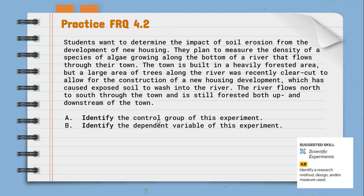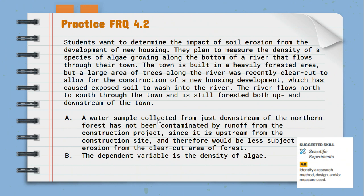The town is built in a heavily forested area, but a large area of trees along the river was recently clear-cut to allow for construction of a new housing development, causing exposed soil to wash into the river. The river flows north to south and is still forested both up and downstream. Students had to identify the control group and the dependent variable. The control group is a water sample collected from just downstream of the northern forest, which has not been contaminated by runoff since it's upstream from the construction site. The dependent variable was the measuring of the density of algae along the bottom of the river.